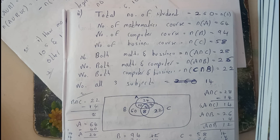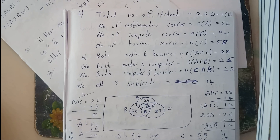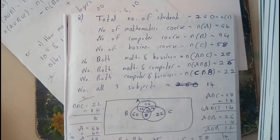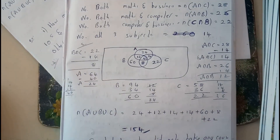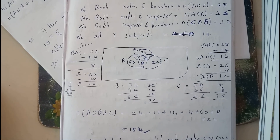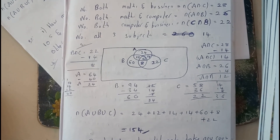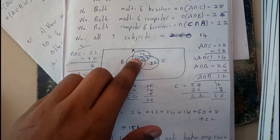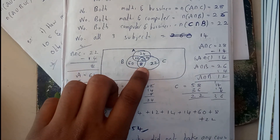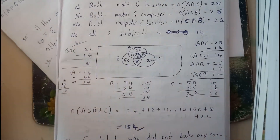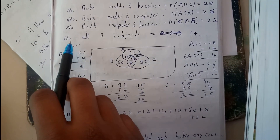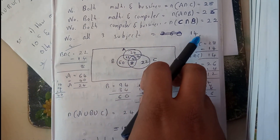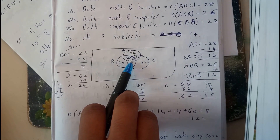He is asking to find the number of students interested in at least one subject. This is a simple problem. Start filling the Venn diagram from the interior part. There are three sets intersecting, giving three two-set intersections and one three-set intersection. The interior part (all three subjects) is filled with 14.